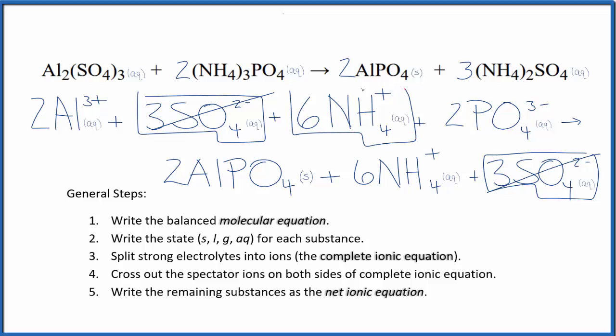Six ammonium ions in the reactants and in the products. Spectator ions, get rid of those. What's left is our net ionic equation for aluminum sulfate plus ammonium phosphate. Let's remove the spectator ions.